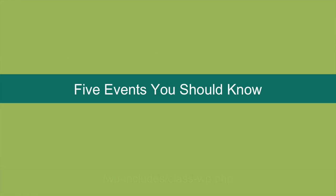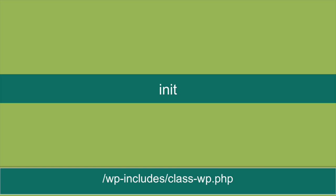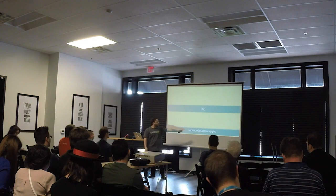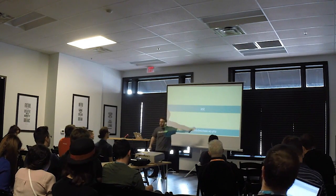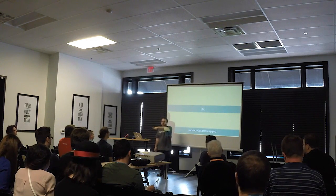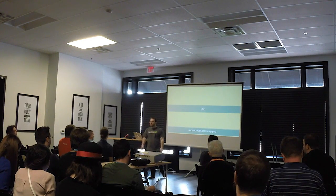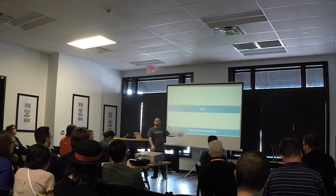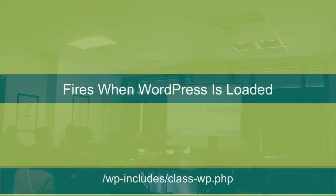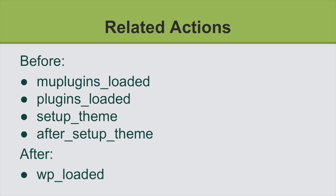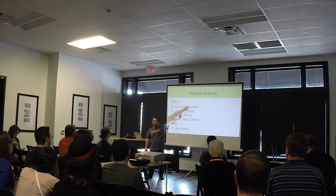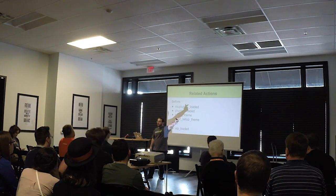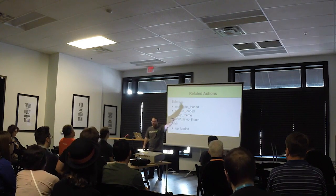Five events. First: init. Init stands for initialized — WordPress is loaded. This is located in class-wp.php in wp-includes. This fires when WordPress is loaded. There are a bunch of related actions that happen before and after. We fire mu_plugins_loaded — after MU plugins are loaded. So if you want to use something that's in a MU plugin, you have to wait until mu_plugins_loaded. Then plugins_loaded, after plugins are loaded.